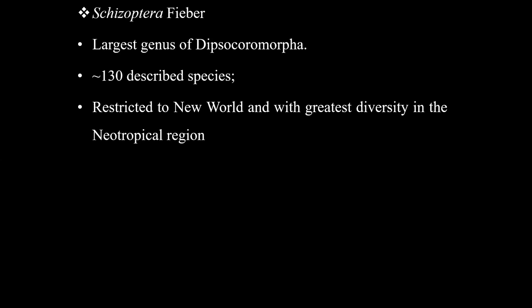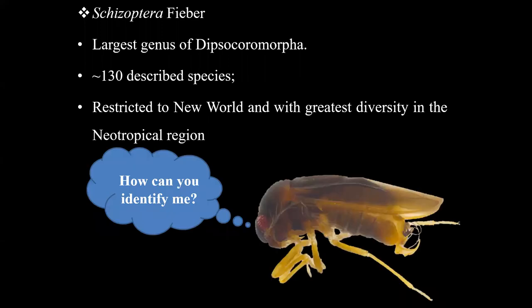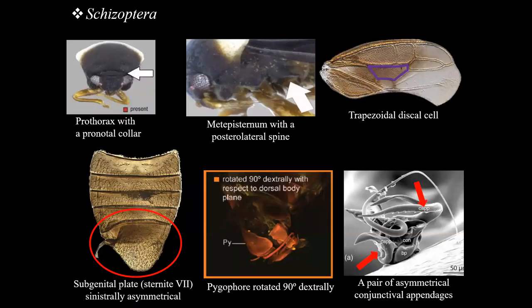If you're looking for Schizopterids in the Neotropical region, in the New World, you will probably be able to find several Schizoptera specimens. But now the question is, how could you identify them? Just based on morphological features, you need to look at the prothorax. If there is this frontal collar, it's likely to be a Schizoptera.